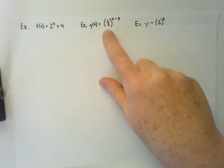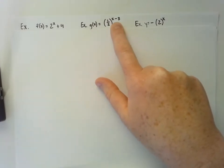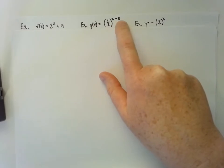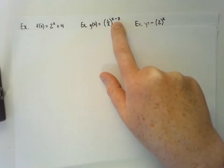In the second example, we have a basic decay function because the base is between 0 and 1. This one shifts to the right 3 because it's in the exponent—it's grouped together—and the negative makes it go to the right.